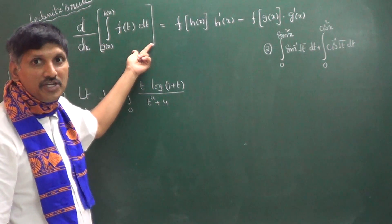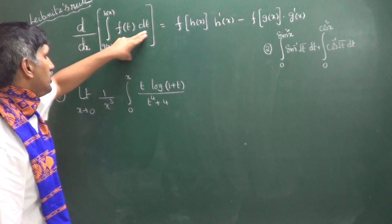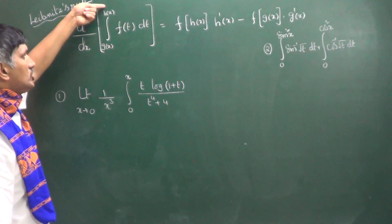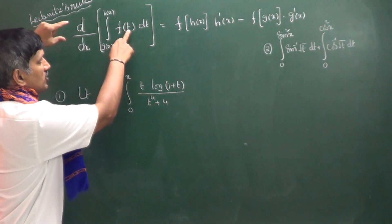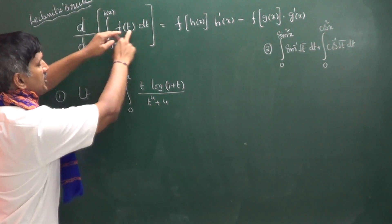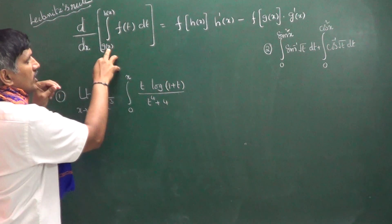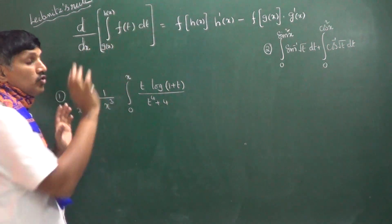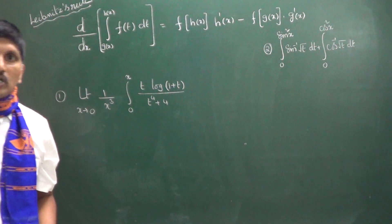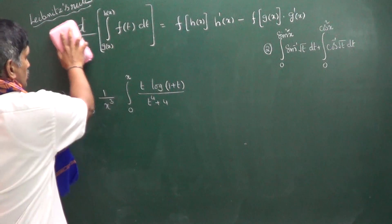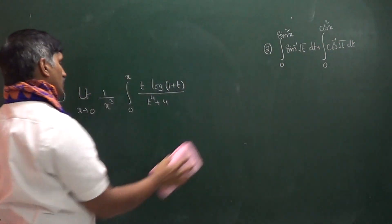For the differentiation of a definite integral — integral of f(t) dt with limits from g(x) to h(x) — in place of t we substitute the upper limit multiplied by its differentiation, minus in place of t the lower limit multiplied by its differentiation. That is the Leibniz rule. Now I am going to discuss an application from a previous year's IIT question.